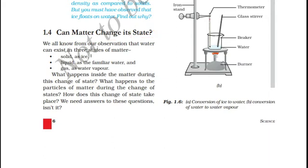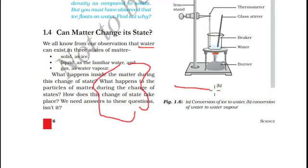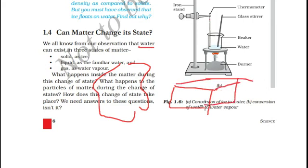We know from our observation that water can exist in three states. Water can exist in a liquid state, water can exist in a solid state, that is in the form of ice, and water can also exist in a gaseous state, that is water vapor.